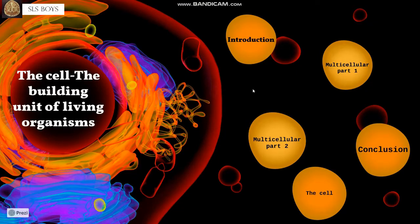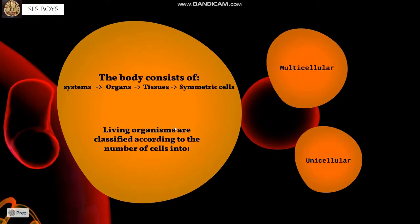Welcome to lesson three in unit one: the cell, the building unit of living organisms. The body consists of systems, each system consists of organs, each organ consists of tissues, and each tissue consists of symmetric cells. Symmetric cells are our subject in this lesson.